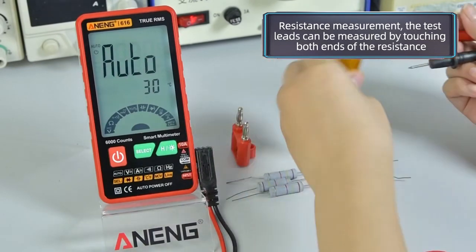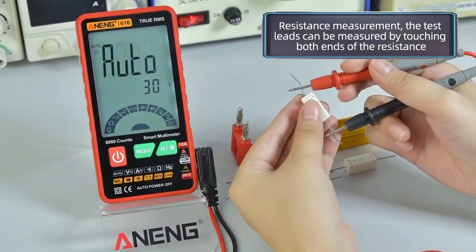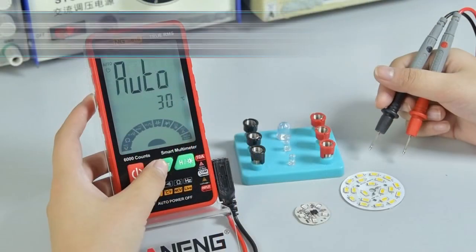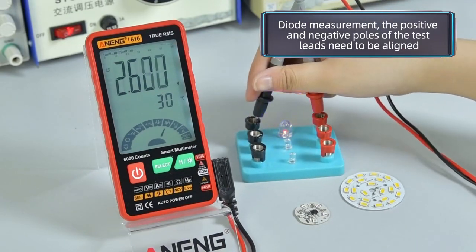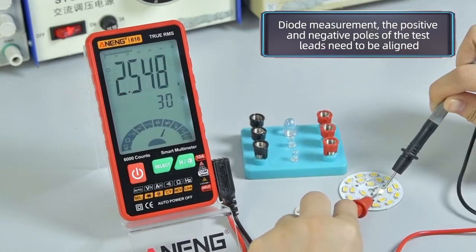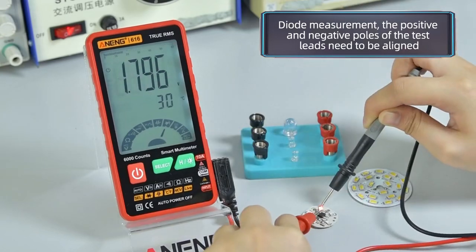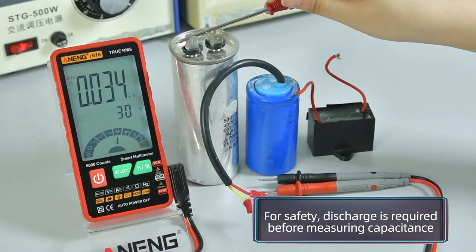Diode measurement. The positive and negative poles of the test leads need to be aligned. For safety, discharge is required before measuring capacitance.